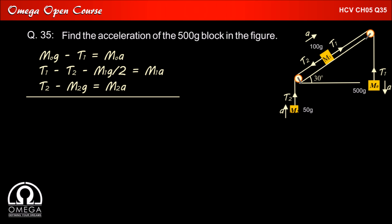Adding equations 1, 2, and 3, we get M0g - M1g/2 - M2g = M0a + M1a + M2a.